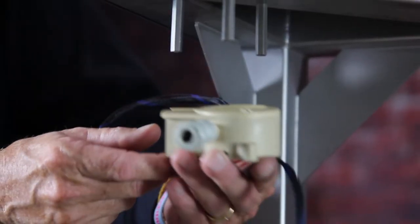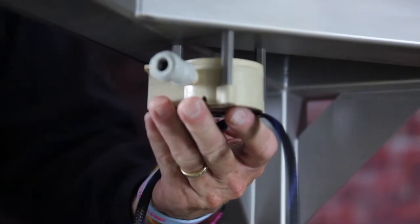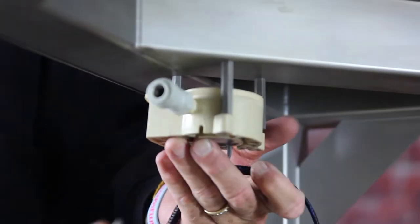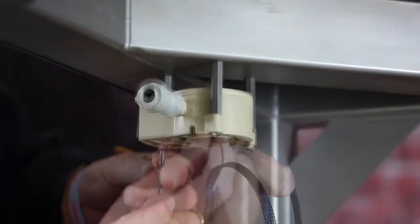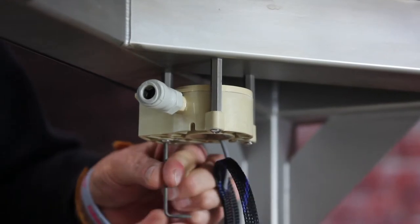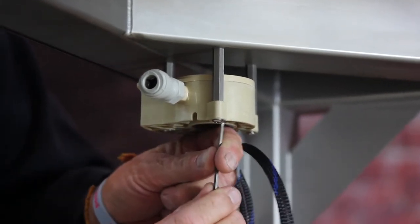The flow sensor mounts on the left side on the three stubs on the bottom of the BrewBomb. Attach the flow sensor with the top facing up and it is directional.